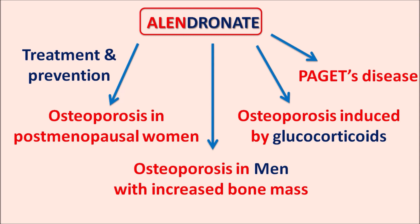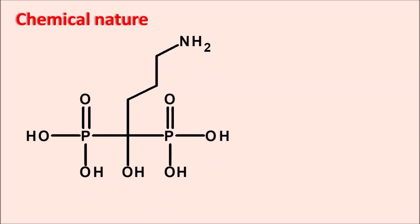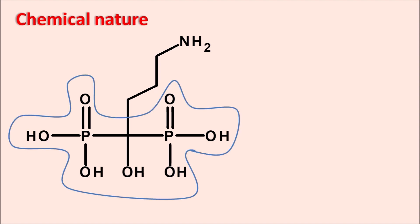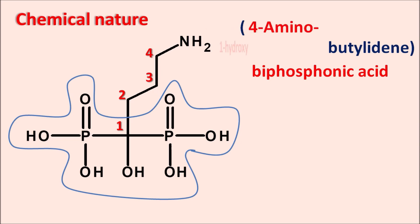Alendronate is a bisphosphonate. Its structure shows two phosphate groups attached by a single carbon — this is the bisphosphonic acid. In salt form it exists as bisphosphonate. The bisphosphonic acid has an alkyl chain with a four-carbon (butylidene) chain numbered one to four. At the first position there is a hydroxy group and at the fourth position an amino group, giving the name four-amino-one-hydroxy butylidene bisphosphonic acid — that is alendronate.